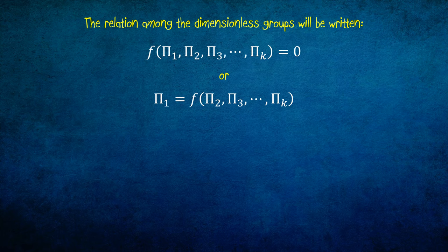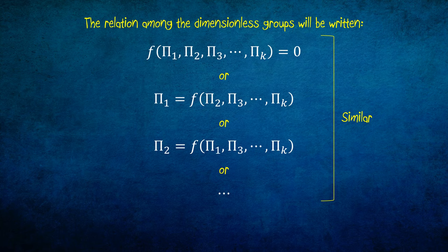Or pi 2 is a function of pi 1, pi 3, until pi k, and so on and so forth. All these presentations are similar. This method is also known as method of repeating variables.